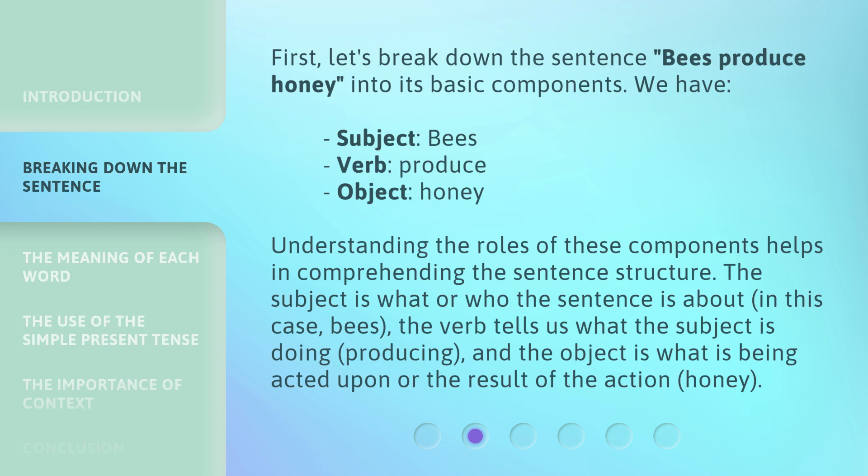The subject is what or who the sentence is about — in this case, bees. The verb tells us what the subject is doing — producing. And the object is what is being acted upon or the result of the action — honey.